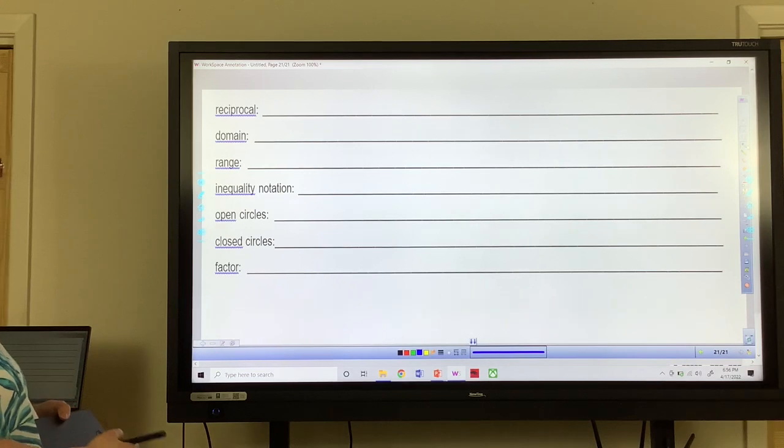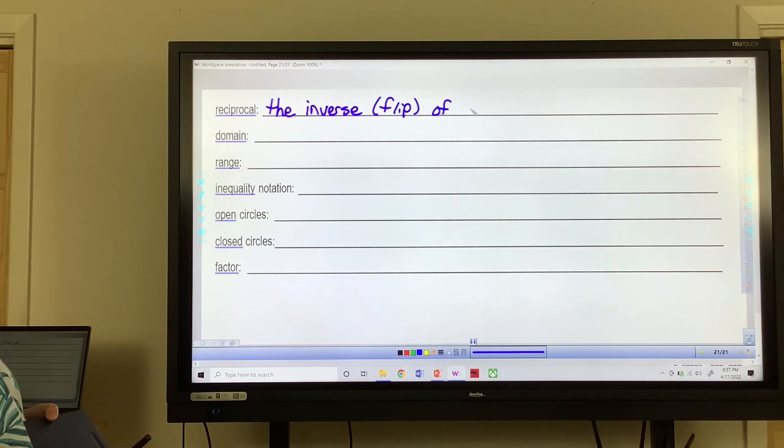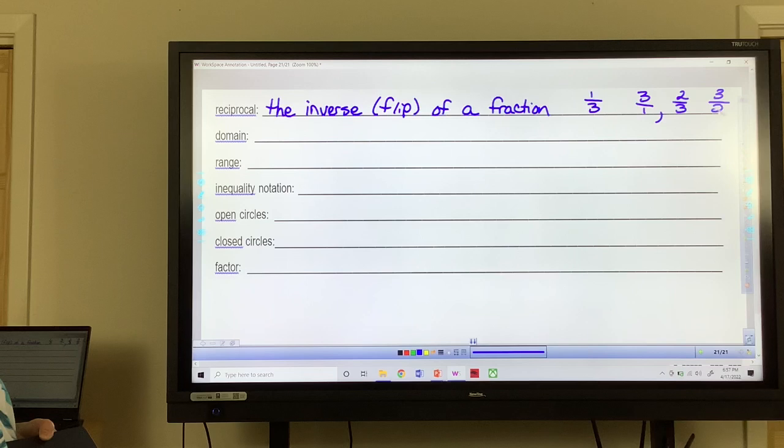Reciprocal. The reciprocal is the flip or the inverse of a fraction. So that would be if I have one third, its reciprocal would be three over one, which is just three, or two thirds would be three over two. So it's the flip. You multiply them, they're going to give you one. So the inverse of a fraction.